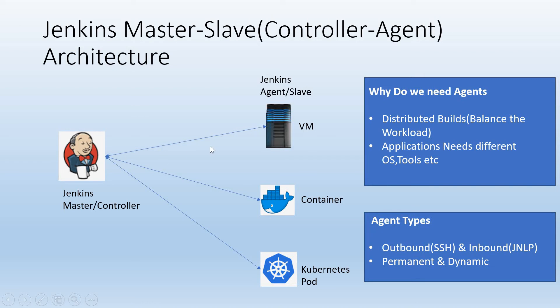So that is about outbound. In the outbound type, the connection is initiated from the master itself to the slave, so most of the control is in the master. We do not need to do much other than setting up the SSH connection from master to slave.